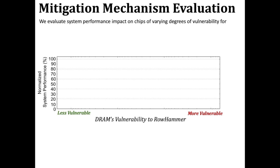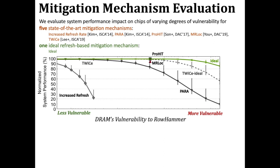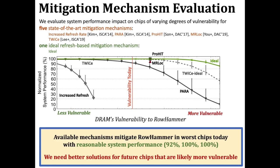We also evaluate the system performance impact when using different mitigation mechanisms on chips of varying degrees of vulnerability, for five state-of-the-art mitigation mechanisms and one ideal refresh-based mitigation mechanism shown in green. We indicate with the orange vertical line the worst degree of rowhammer vulnerability observed across the modern DRAM chips we characterized, and find that available mitigation mechanisms can mitigate rowhammer in worse chips today with reasonable system performance overhead. However, we need a better solution for future DRAM chips that are likely to be more vulnerable to rowhammer, as existing mitigation mechanisms either do not scale to support chips of very high degrees of rowhammer vulnerability or have significantly high performance overheads.